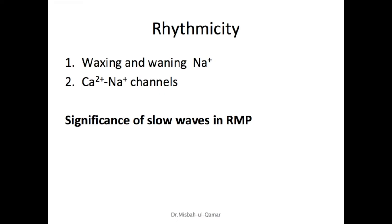Why do slow waves not cause muscle contraction? Smooth muscle contraction occurs in response to entry of calcium ions into the muscle fiber. Slow waves do not cause calcium ions to enter the GI muscle fiber — instead, slow waves cause entry of sodium ions only. It is only during spike potentials that significant quantities of calcium ions enter the fibers.